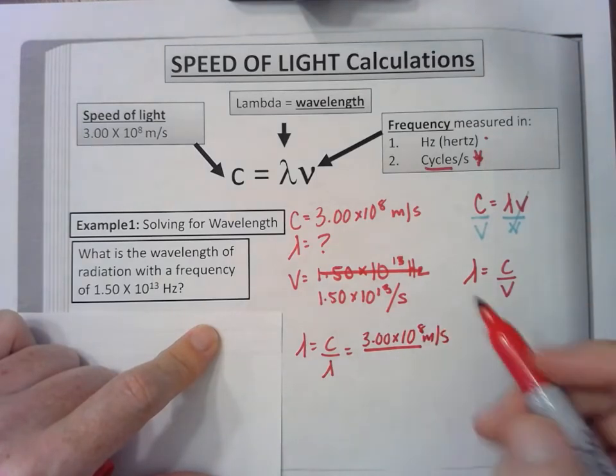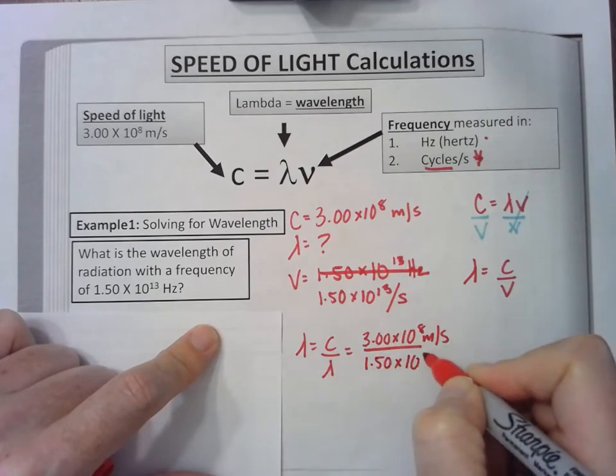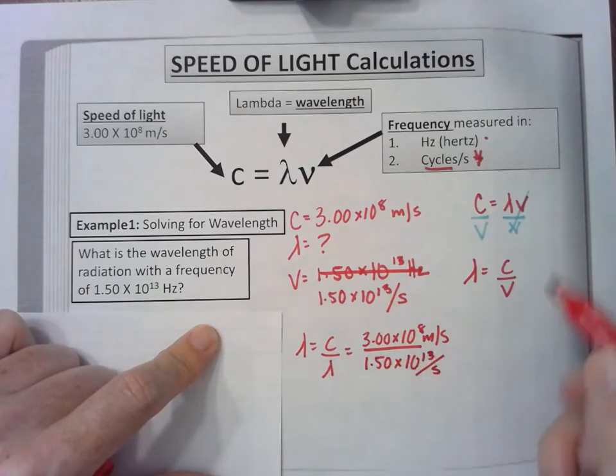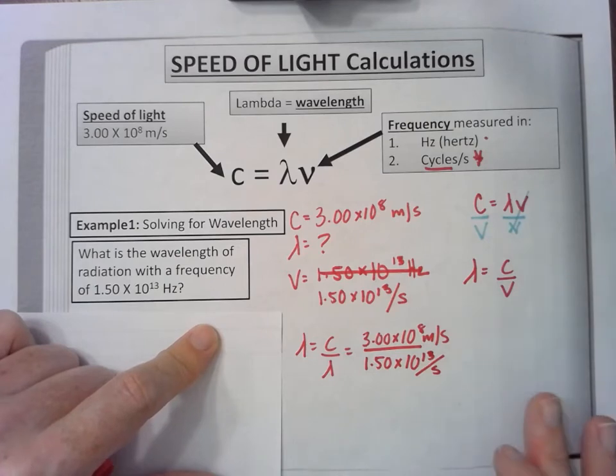Now if you notice, we have two 'per seconds', so we have two fractions. If I'm dividing a fraction by a fraction, I can multiply by the reciprocal.